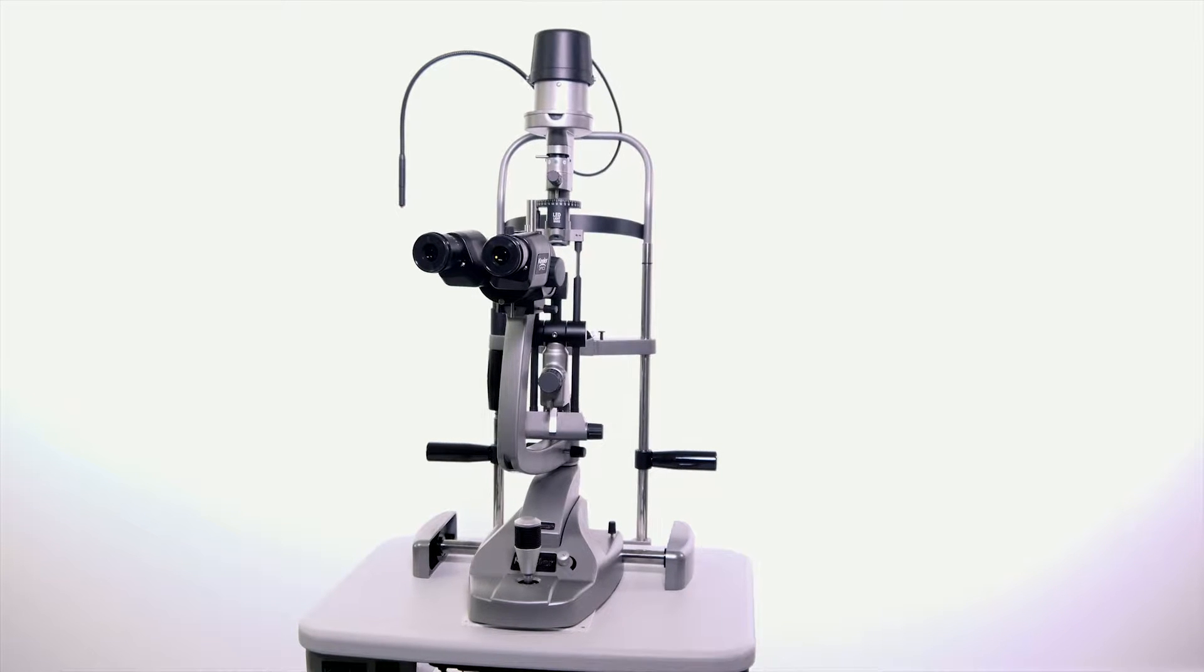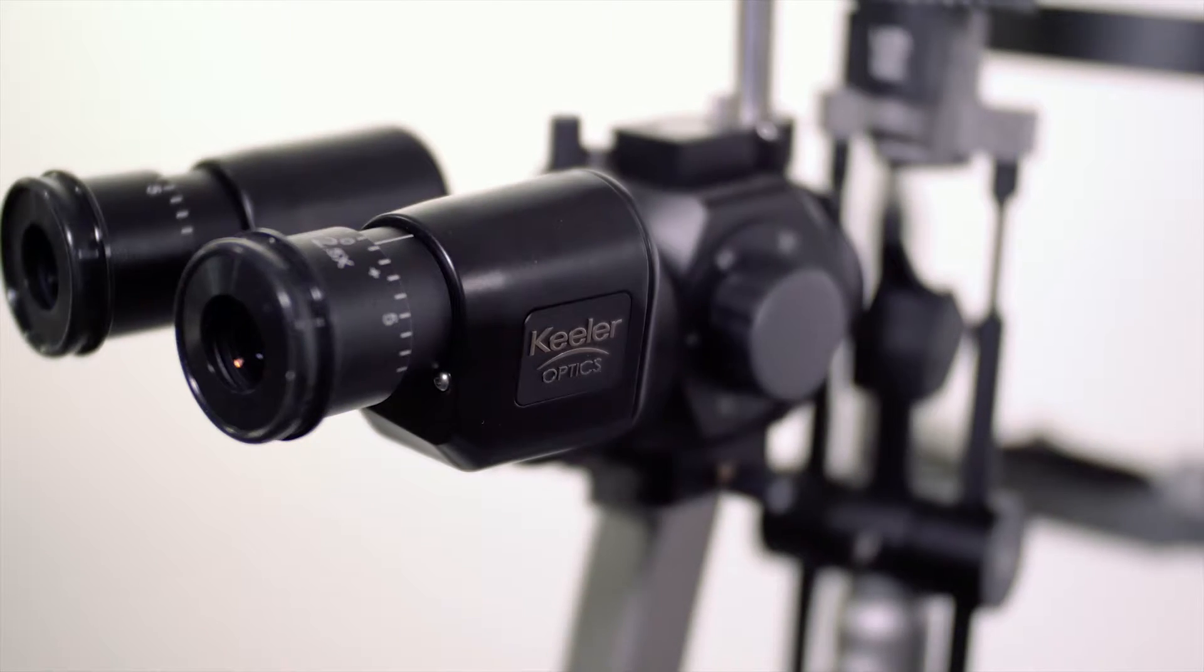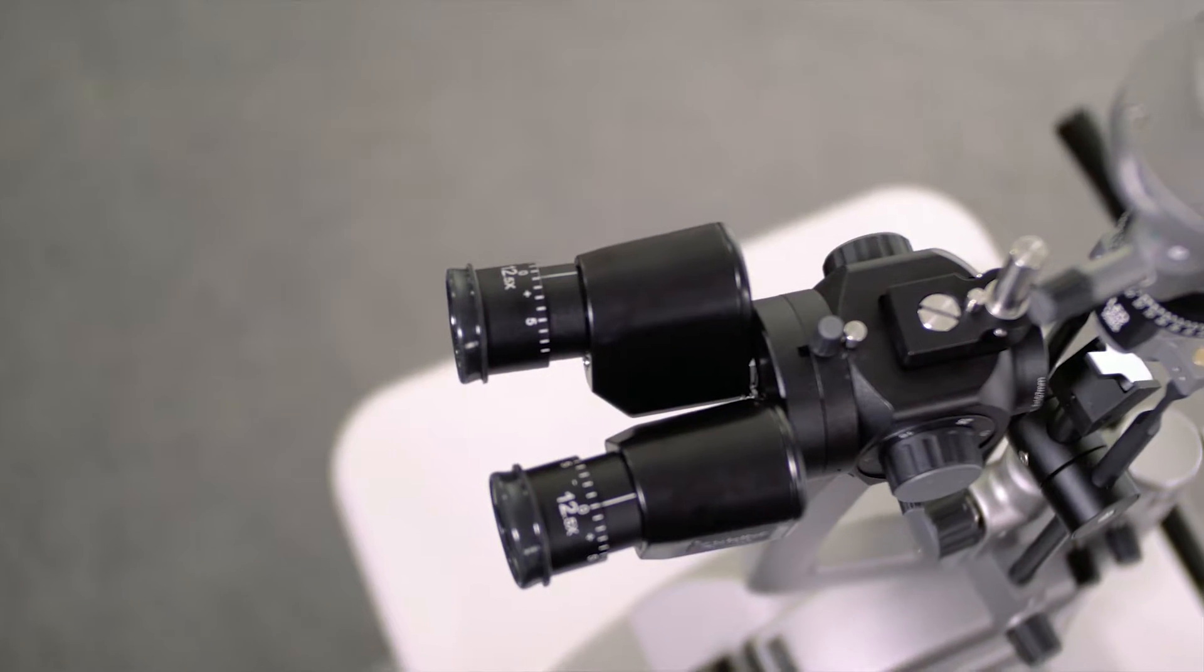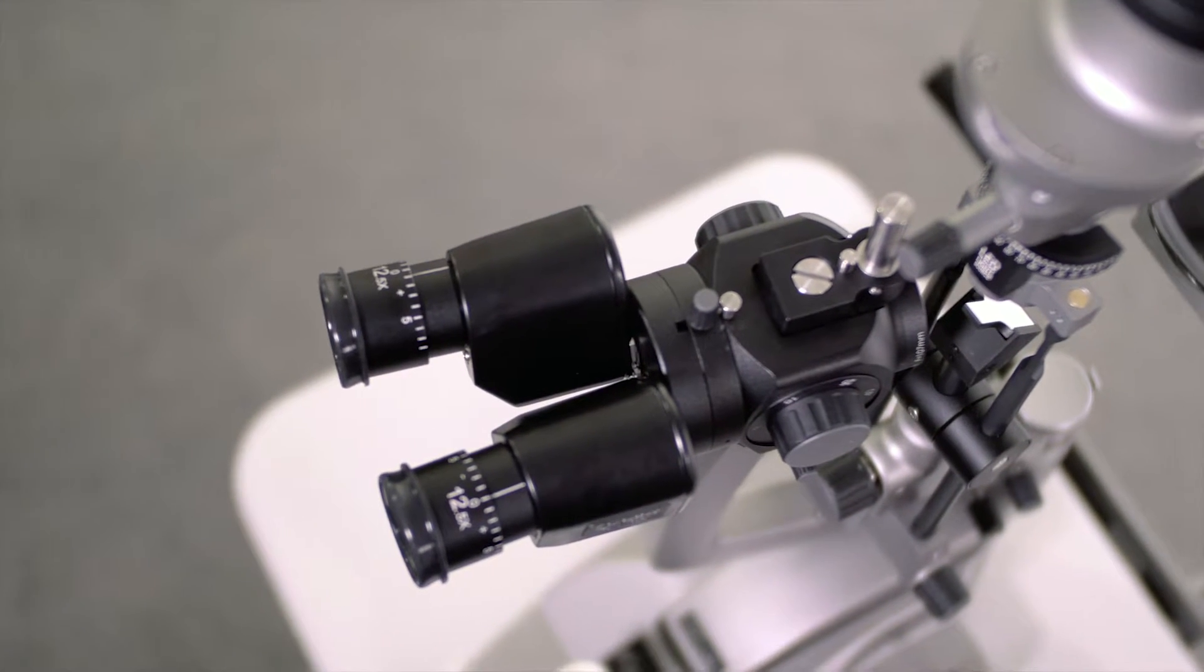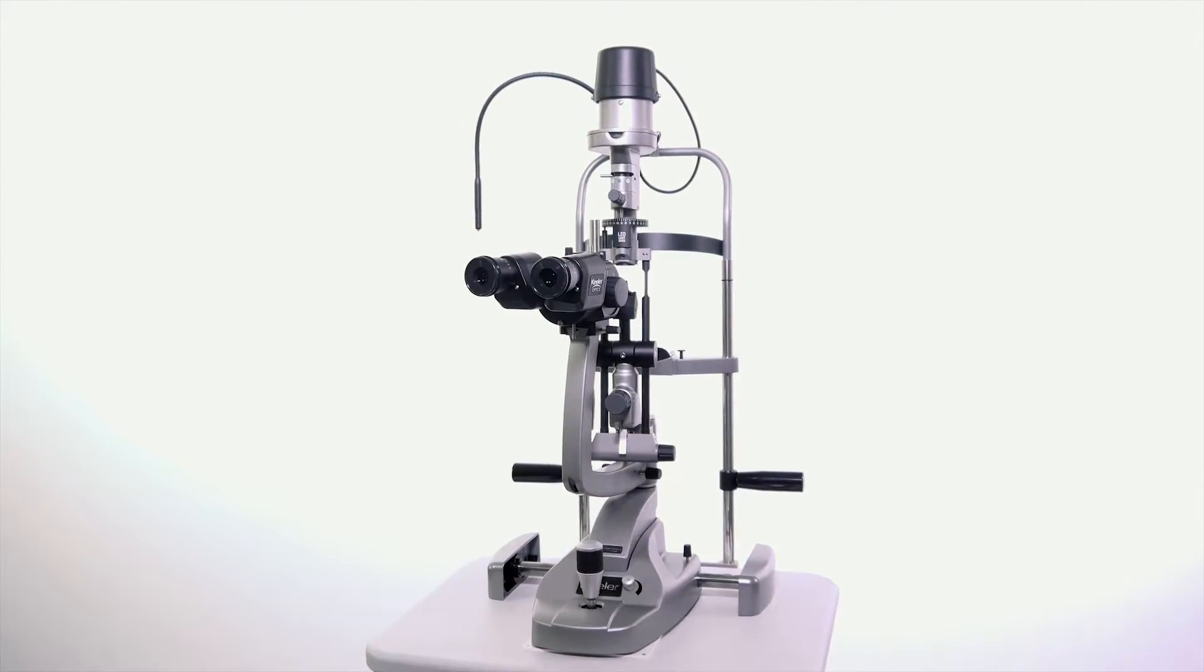The K-Series slit lamps are our upper illumination systems that are used for examination of the anterior segment and posterior segment of the eye. This video will provide an overview of the features of the K-Series and instructions on how to use it.